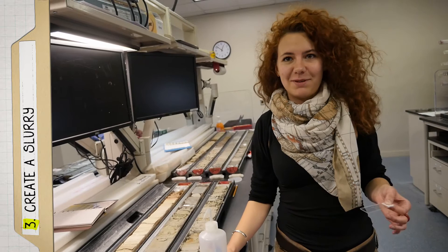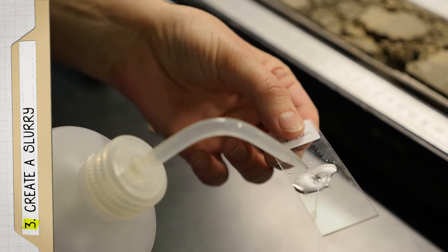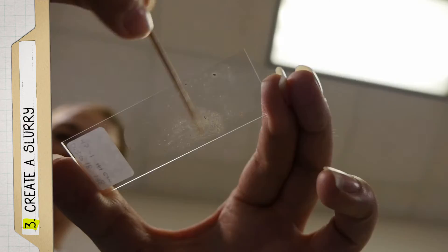Now that you have the sediment on your slide, you dilute it with water and disperse it with a toothpick so it's really even on your slide.